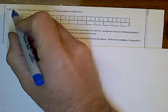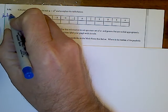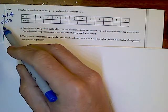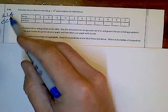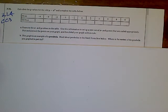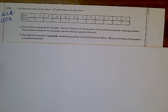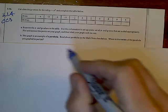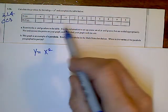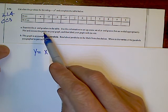Alright, we are looking at problem 3-36 from section 3.1.4, this is CC3. The problem wants us to take a rule, in this case the rule is y equals x squared, and complete the table as well as plot the points on a graph and talk about what we see here.